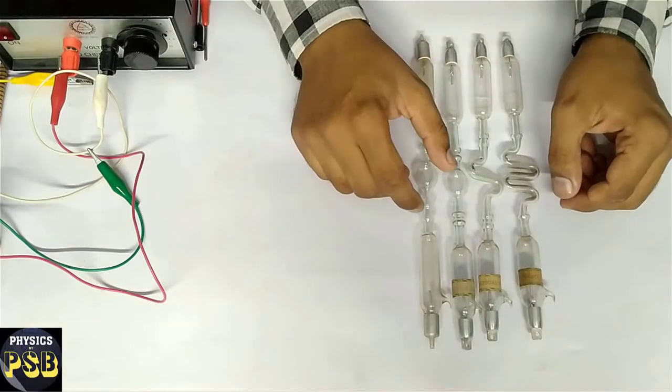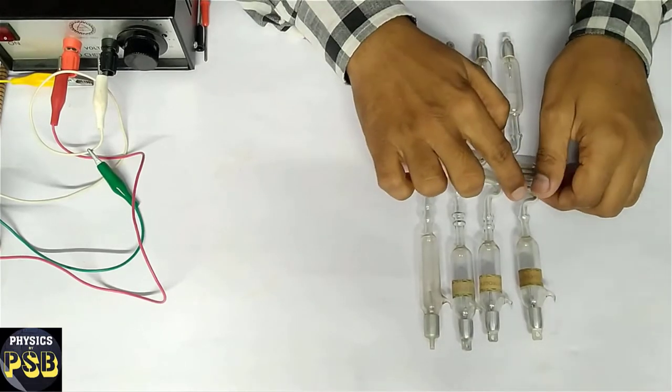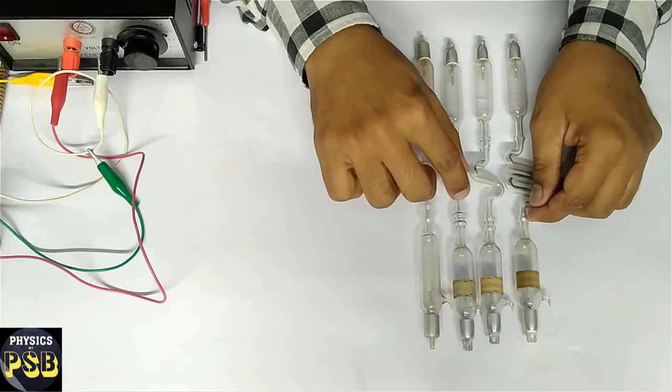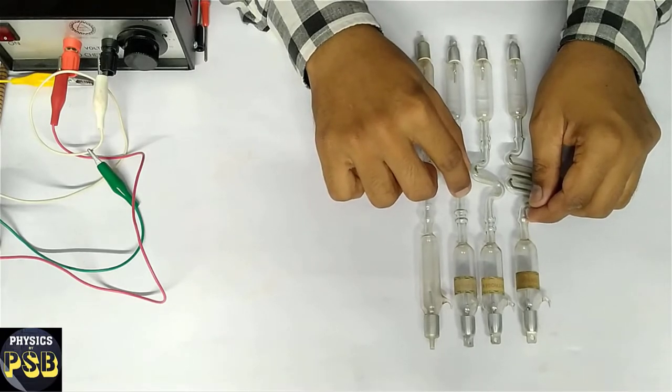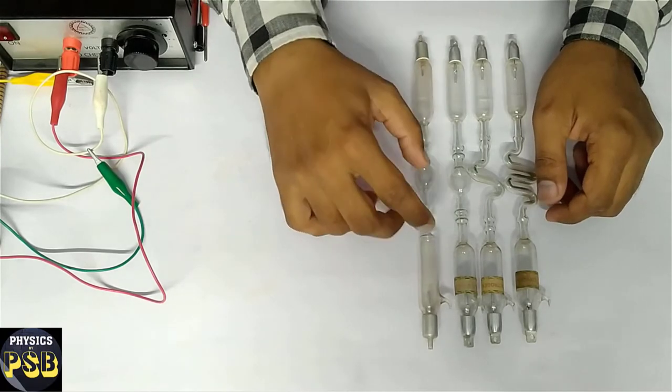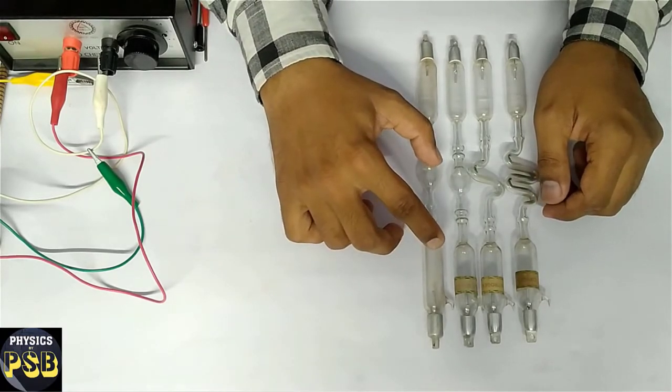Here I have four Gieseler tubes. This one is filled with oxygen. The second one is filled with nitrogen. The third one is filled with hydrogen gas, and the fourth one is completely empty. It is evacuated.